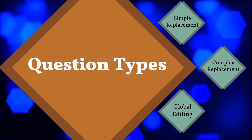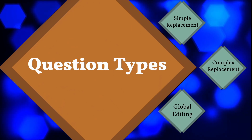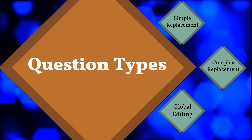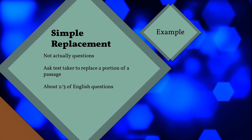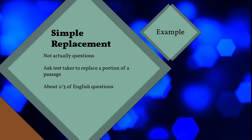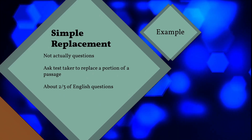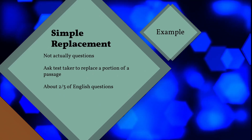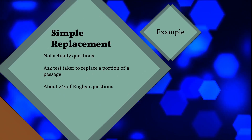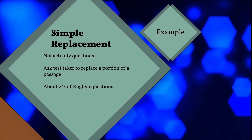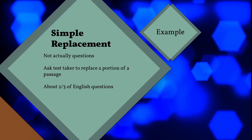As to the question types, I would divide them roughly into three categories. Simple replacement questions are easy to spot, and they make up the huge majority of questions on the English section — as many as two-thirds of all the questions. They actually aren't questions in the formal sense. There will not be any question or prompt associated with simple replacement questions. Instead, there will be an underlined portion of the passage with a number, and you will have to choose between not changing the underlined portion or replacing it with three possible replacements.